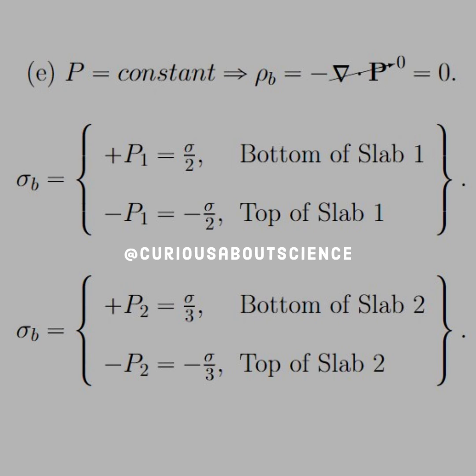Thus, following the direction of the minus and plus signs gives us the direction of P. This is similar for slab 2, just with sigma over 3 instead of sigma over 2.